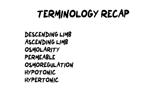Now for the terminology recap — you can use all of these terms to create flashcards. Starting with the physical structure of the loop of Henle: the descending limb goes down and the ascending limb goes up. It's important to know not just the names but what happens in each. In the descending limb we absorb water only back into the blood, whereas the ascending limb absorbs salt back into the surrounding tissue, which then allows water to leave as well.